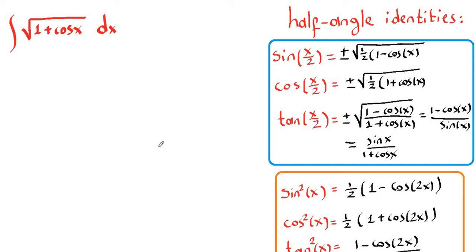Hello everybody. In this video we are going to integrate the square root of 1 plus cosine of x. For this integration we are going to use half-angle identities.